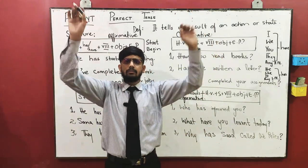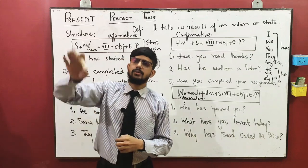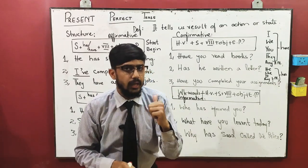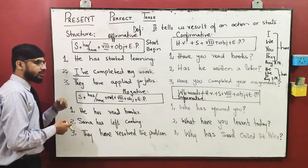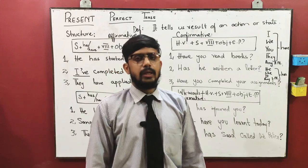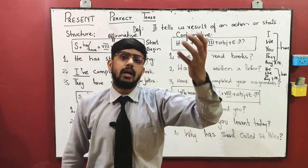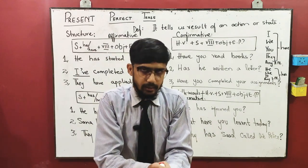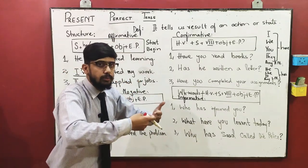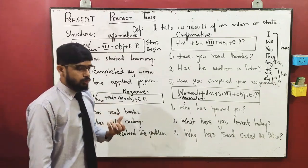The most common sentence we have been using since our childhood, that is: Miss, I have done my work. Maine apna kaam kar liya. For example, in the classroom, if you copied something from the board, then you say: Miss, ma'am, sir, I have completed my work, I have done my work. The third sentence is: they have applied for jobs. Unhonne jobs ke liye apply kar diya hai. That is all about affirmative sentence.